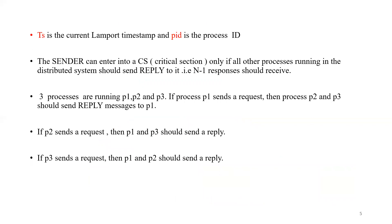RTS is the current Lamport timestamp and PID is the process ID. The sender can enter the critical section only if all other processes in the distributed system send a reply to it — that is, it must receive N minus one responses. For example, if there are three processes running, the sender should receive 3 minus 1, which is 2, reply messages.